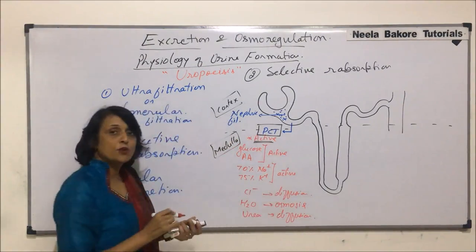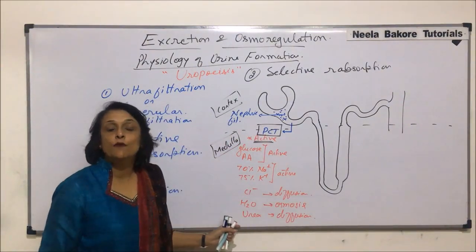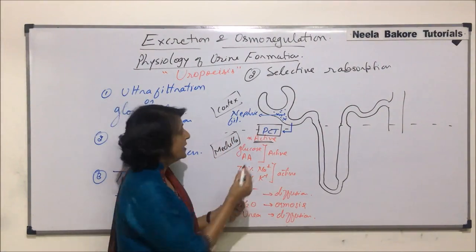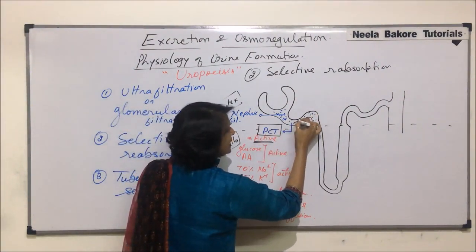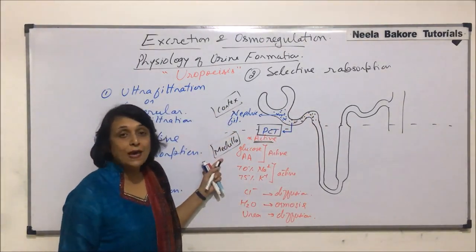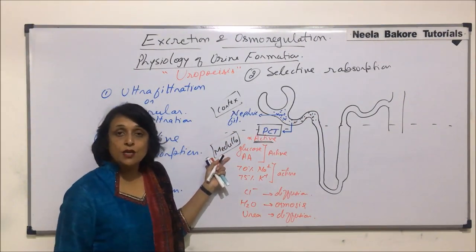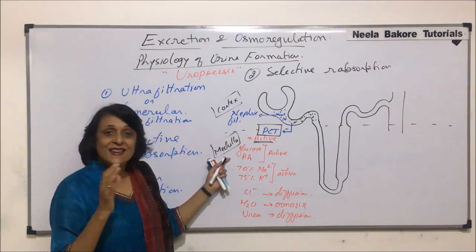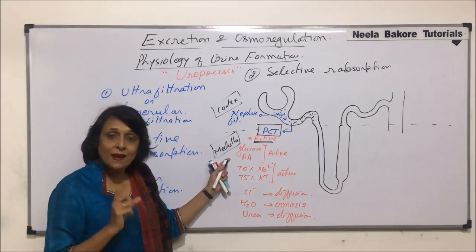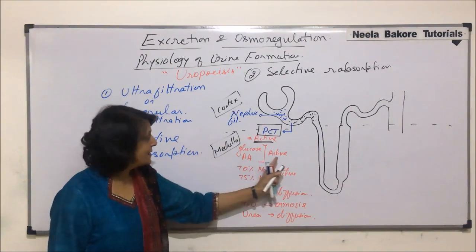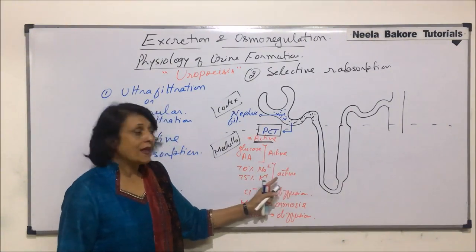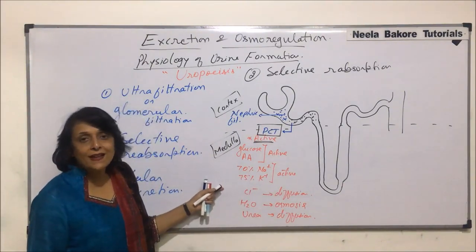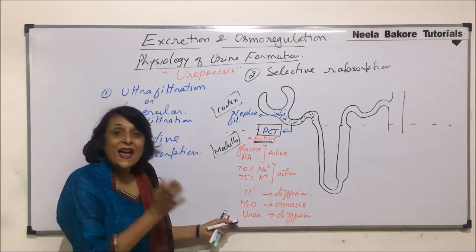Most of the things are absorbed actively; certain things passively move out from the filtrate. So through PCT, all glucose and amino acids — high threshold substances — get absorbed. Sodium and potassium ions, about 70–75%, are absorbed actively. Other things like chlorine ions, water, and urea passively get absorbed with no expenditure of energy.